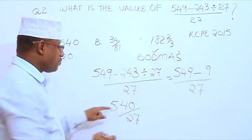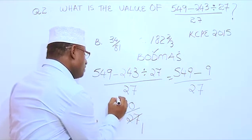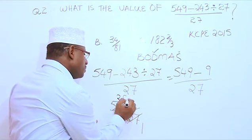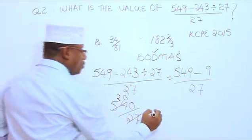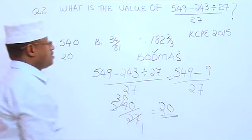27 times 2 is 54. By 27, 1 makes me 27, 2. And there is a 0 here. We have 20. Our answer.